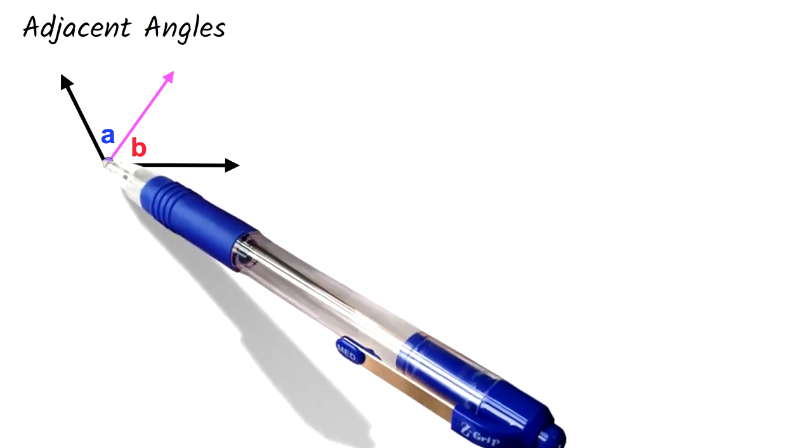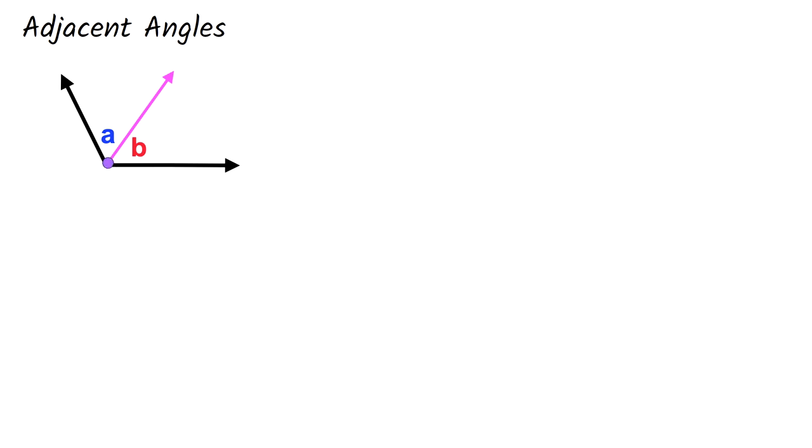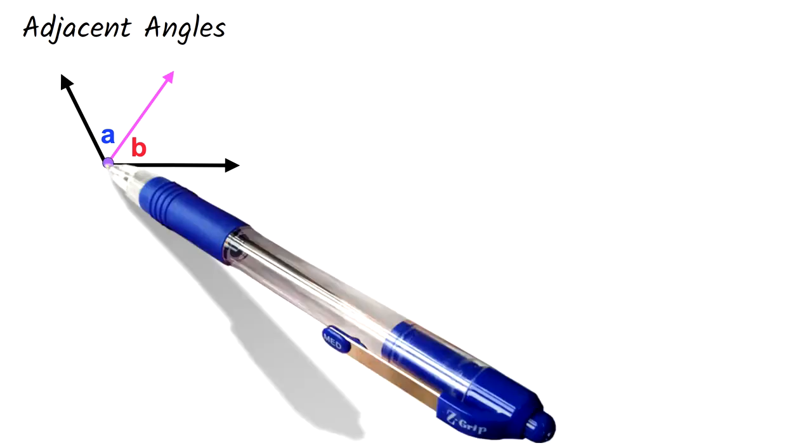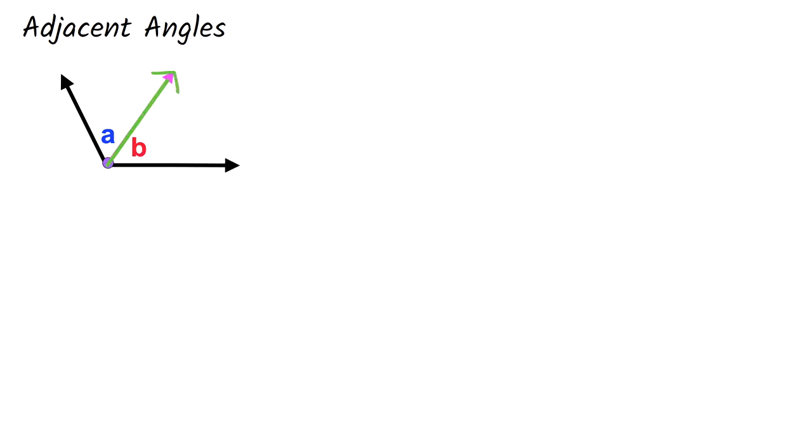Adjacent angles are two angles that share a common side and a common vertex. These two angles, angle A and angle B, are adjacent. Notice that they have the same vertex, which is basically the corner point. Also, they share this side. So adjacent angles are like one angle that has been divided into two by this green line.